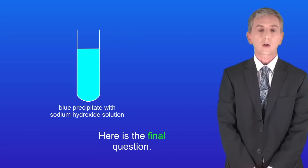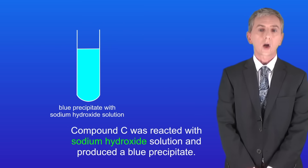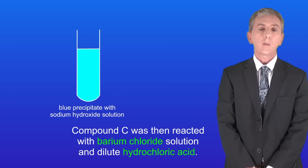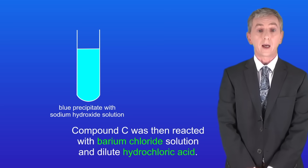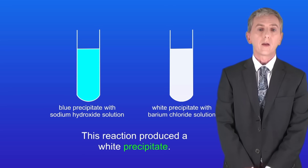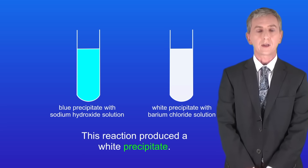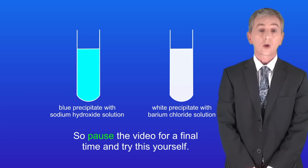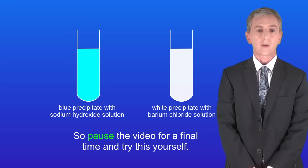Here's a final question. Compound C was reacted with sodium hydroxide solution and produced a blue precipitate. Compound C was then reacted with barium chloride solution and dilute hydrochloric acid. This reaction produced a white precipitate. Identify compound C. Pause the video and try this yourself.